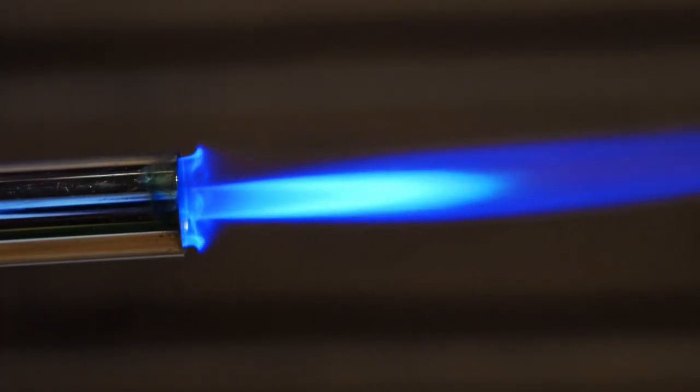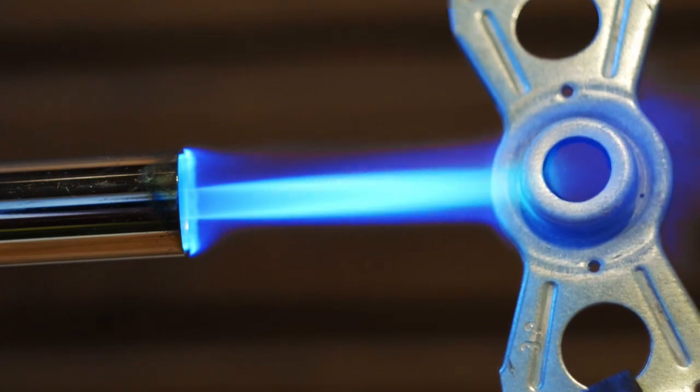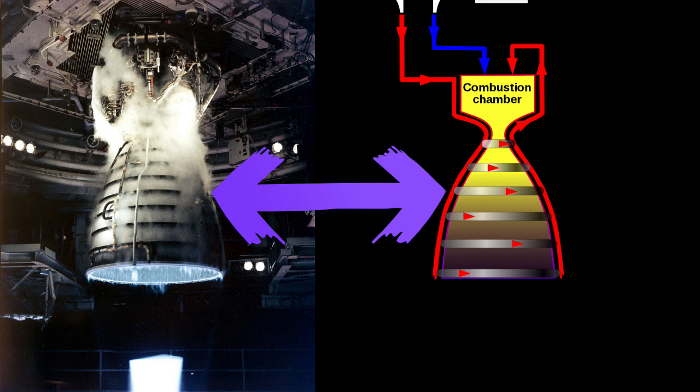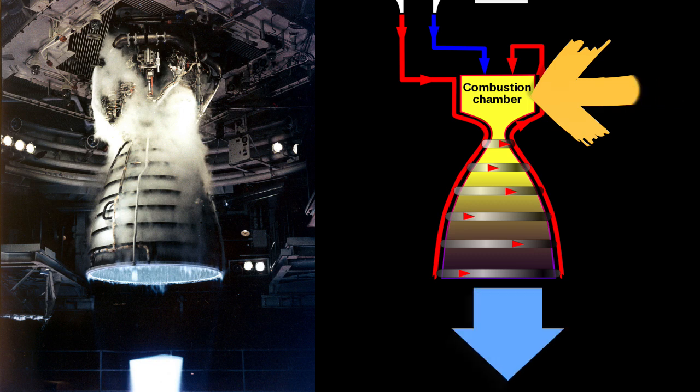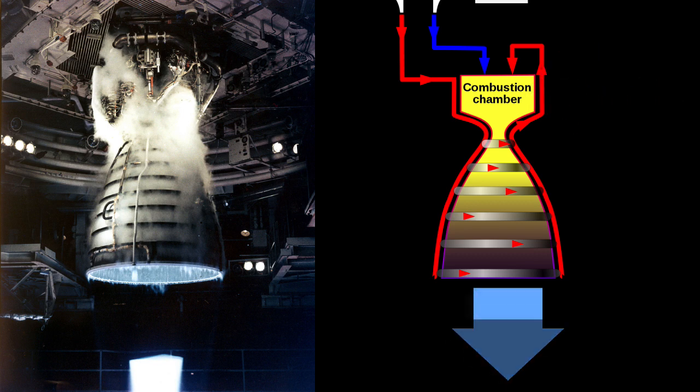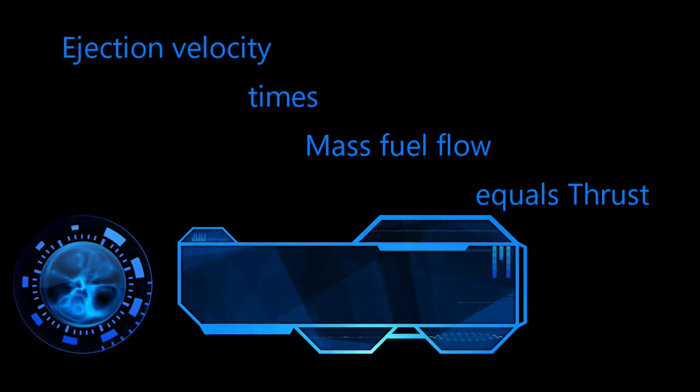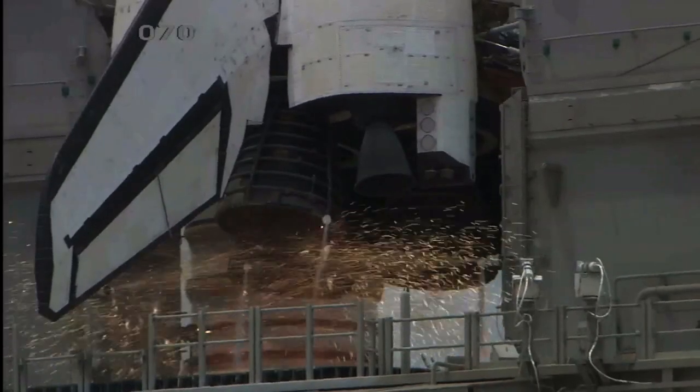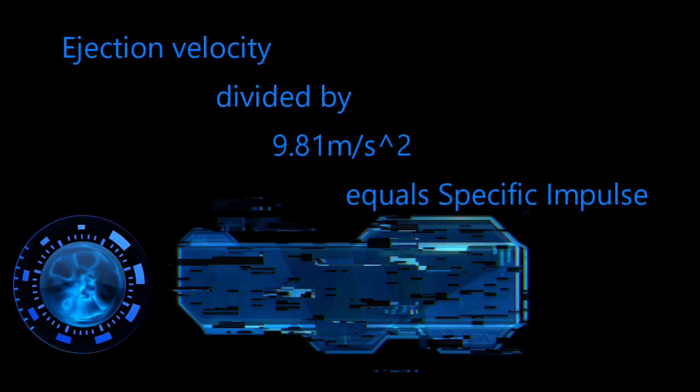The highest temperature most rocket engine components can withstand is about 3000 Kelvin. Modern rockets run the fuel over the nozzle and combustion chamber to keep it cool and allow it to withstand high temperatures. The temperature and pressure in the combustion chamber determines the ejection velocity of the propellant. The ejection velocity of the propellant times the mass of propellant flowing through the engine determines the thrust. Chemical engines process a lot of propellant at a pretty high temperature and max out with a specific impulse of about 455 to 460 seconds.